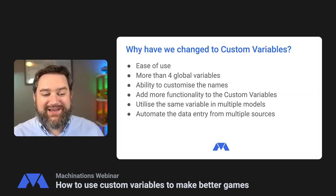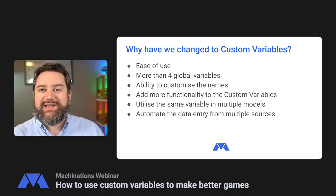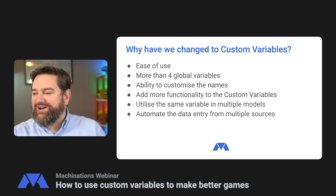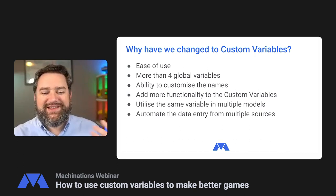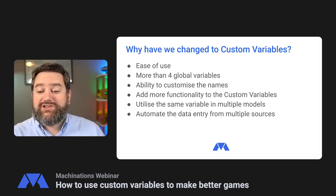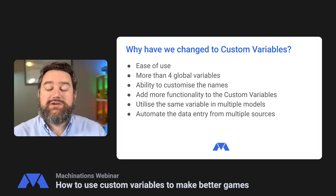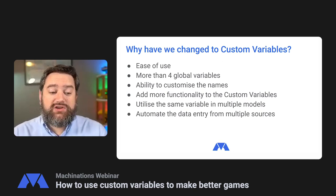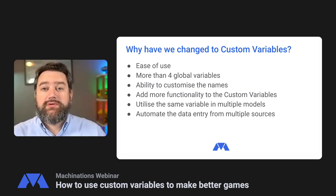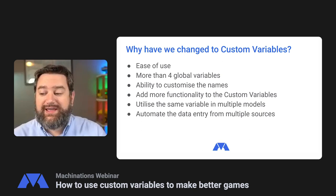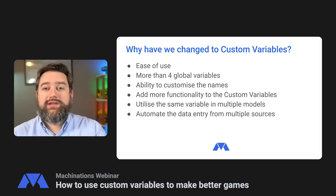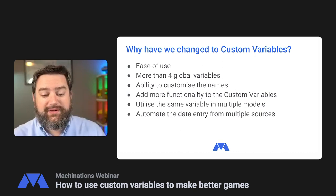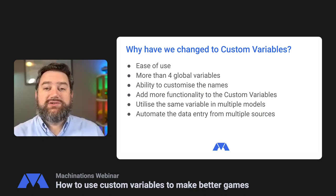This has produced our biggest update so far in Machinations history. We now have the ability to customize the names — it used to be things like strength, randomness, strategy, and a couple of others. Now you can completely customize those. We've added a lot more functionality, including the integration of MathsJS and external data sources. You can utilize the same variables in multiple models, set up one variable and copy it into whichever models you're using, and automate data entry from multiple sources.